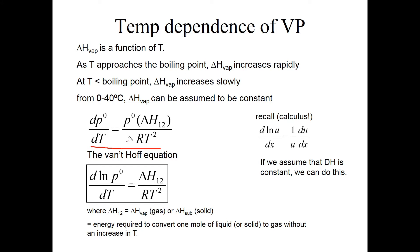We can do that integration pretty simply if you remember your calculus. It's easy to do as long as we assume that delta H is constant. If delta H is not constant, then the integration becomes more difficult. But if you assume that delta H is constant, you end up with this equation right here, which is called the Van't Hoff equation.